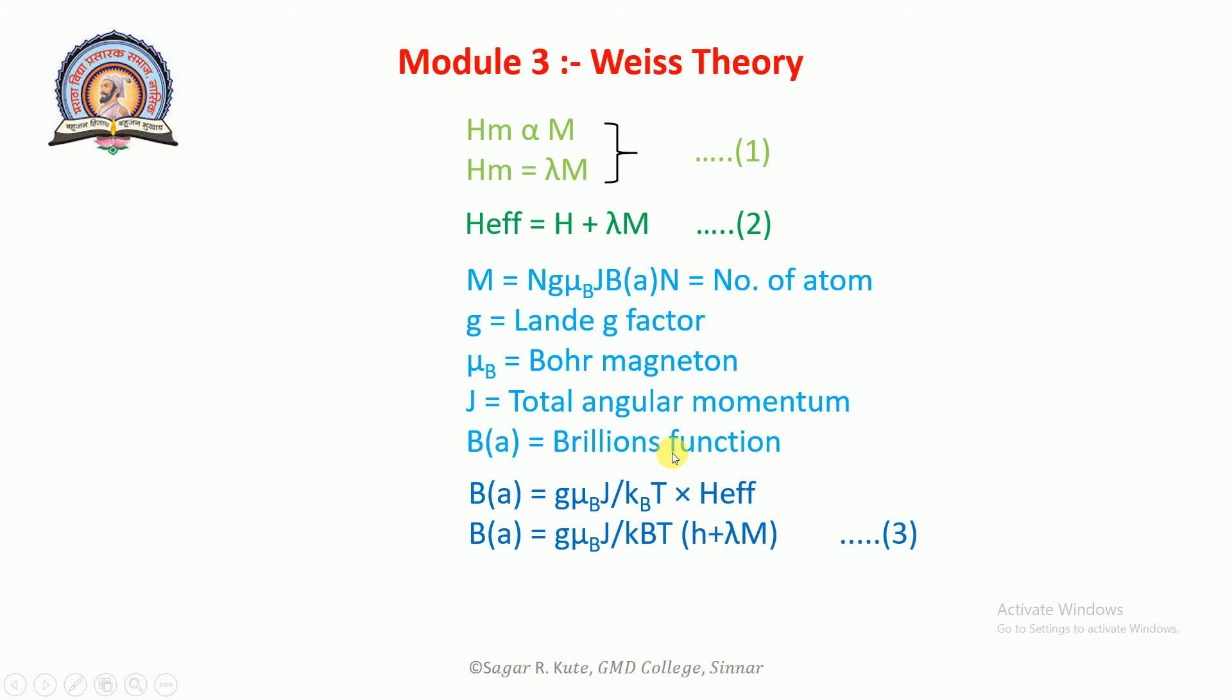B(a) equals g mu_B J over k_B T times H_effective, that is B(a) equals g mu_B J over k_B T times (H plus lambda M). This is equation number 3.